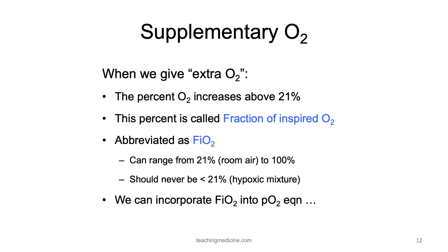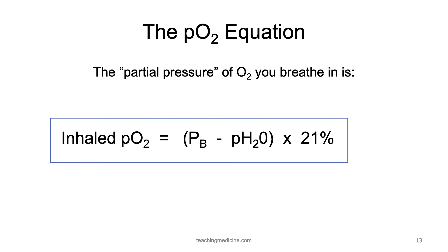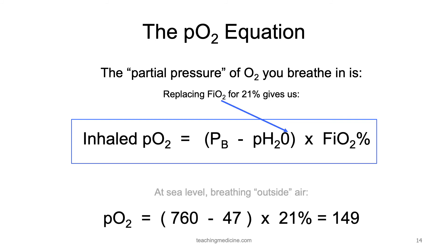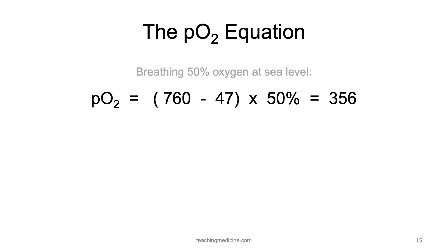We can now incorporate FiO2 into the oxygen equation we just derived. The partial pressure of oxygen that you breathe in equals the atmospheric pressure minus the water vapor pressure, times the FiO2. At sea level breathing outside air, we use a barometric pressure of 760, a water pressure of 47, and an FiO2 of 21%. If a person was breathing 50% oxygen at sea level, we would replace 21% with 50% in this equation.